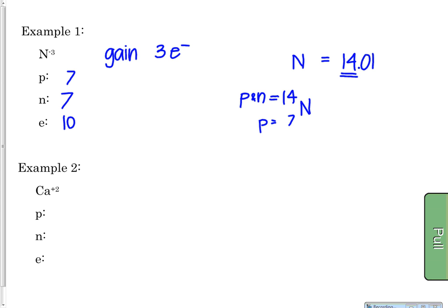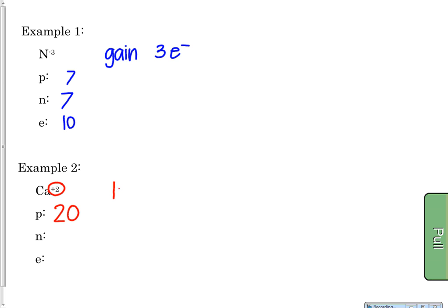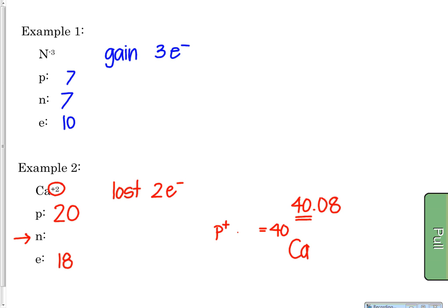Now let's practice with calcium. Find calcium on your periodic table — it's element number 20, so it has 20 protons and used to have 20 electrons. The positive two charge tells us it lost two electrons, so it now has only 18 electrons. For neutrons, the atomic mass is about 40.08, which we round to 40. The mass number of 40 minus the atomic number of 20 gives us 20 neutrons.